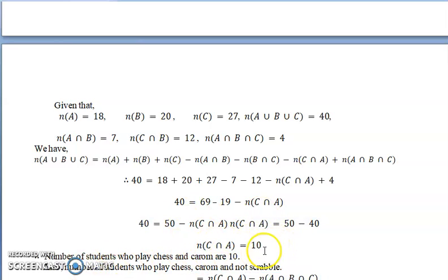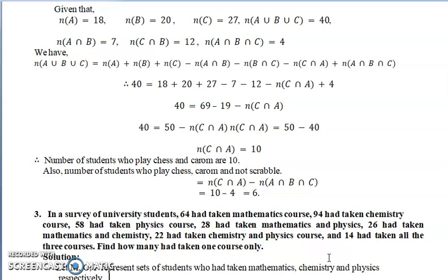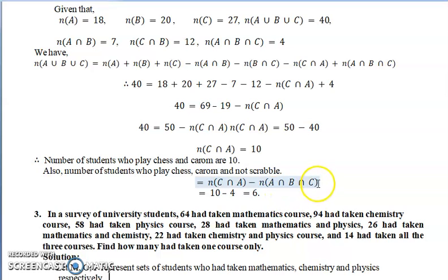For the second question — the number of students who play chess and carom but not scrabble — that is n(C∩A) − n(A∩B∩C). Because we want to omit scrabble, we subtract the all-three intersection. Replacing the values gives 6 as the answer.